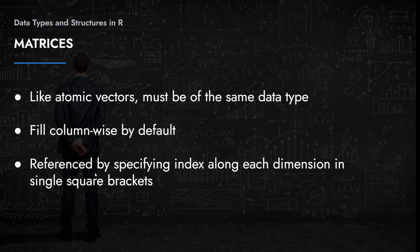Like atomic vectors, matrices must be of the same data type. An important note is that matrices are filled column-wise by default — this may be counterintuitive, but you are given the option to fill row-wise if needed. Elements within matrices are referenced by specifying the index along each dimension in single square brackets. For example, to locate the bottom-right element of a 3x3 matrix, you would refer to it as [3,3], meaning the third row and third column.